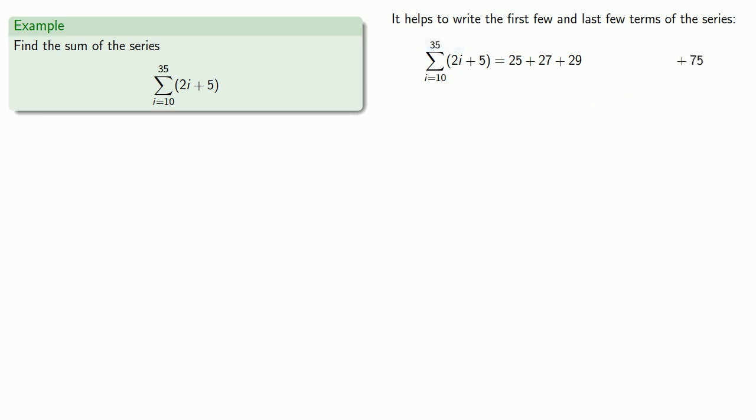Meanwhile the last term corresponds to i equals 35 so it's going to be. And the term before it is going to correspond to i equals 34 so it will be.